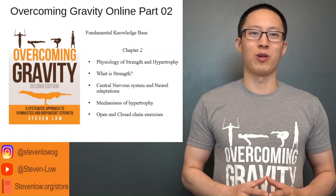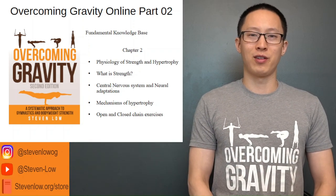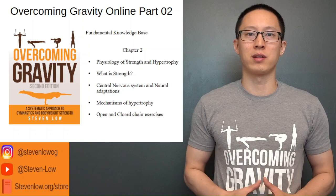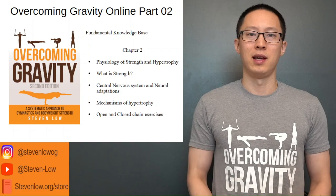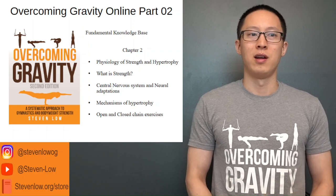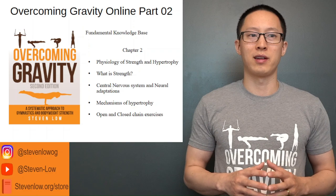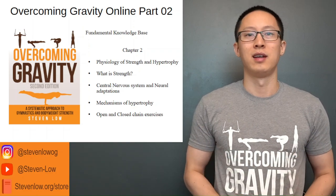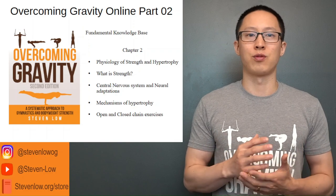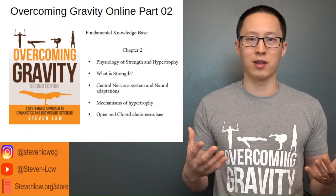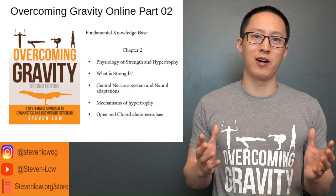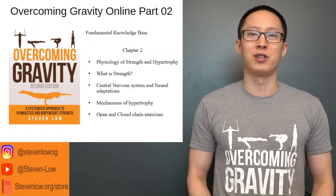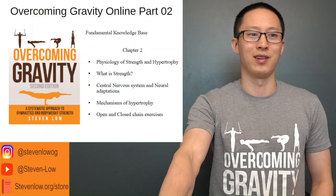Hey guys, this is Stephen Lowe and we're going to be covering Overcoming Gravity Online Part 2. This is still the first part of the Fundamental Knowledge Base. In Chapter 2 we'll cover the physiology of strength and hypertrophy, what is strength and how to understand it, the central nervous system and its role in improving neural adaptations for strength, the mechanisms of hypertrophy, and also closed and open chain exercises. So let's get started.